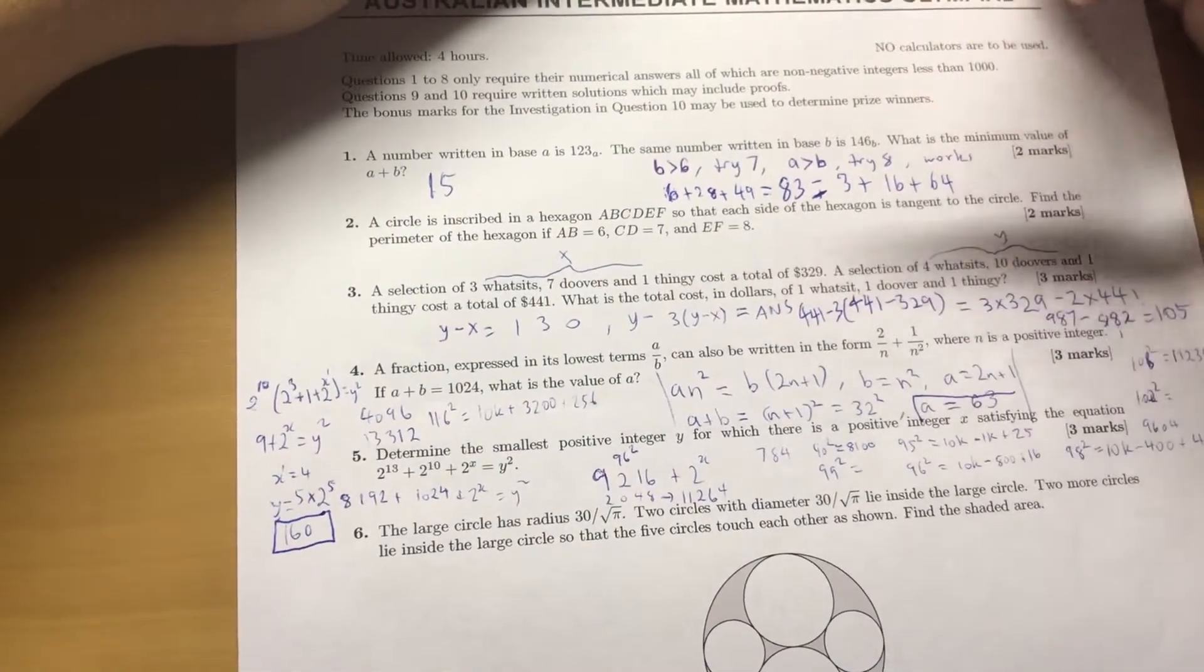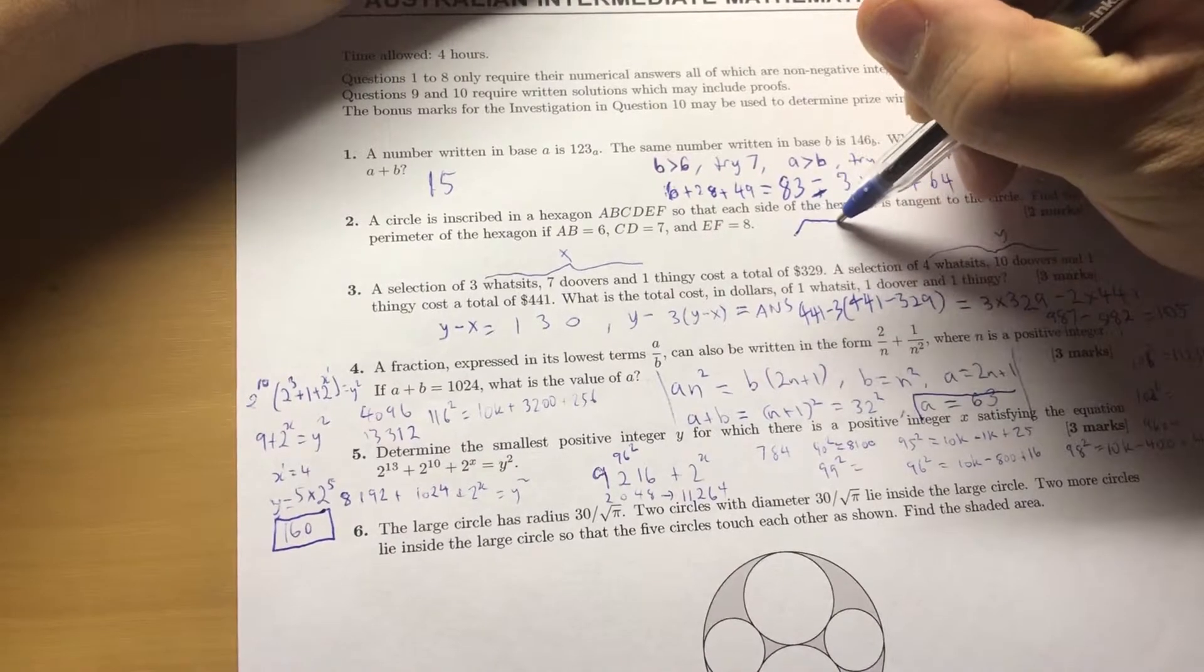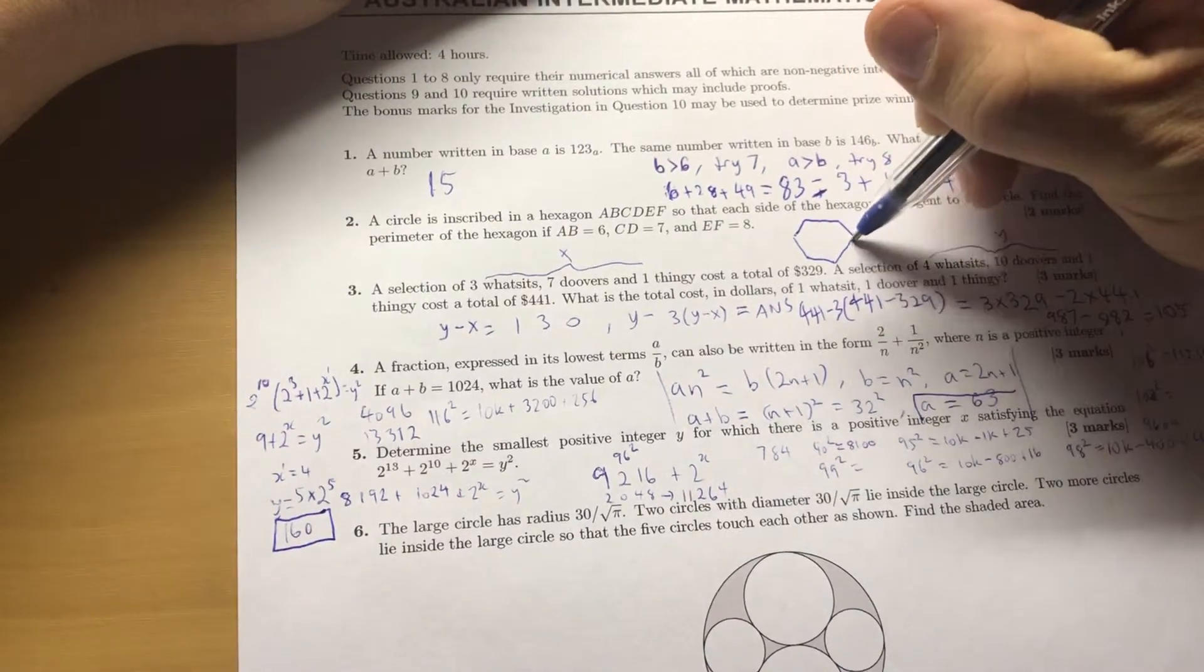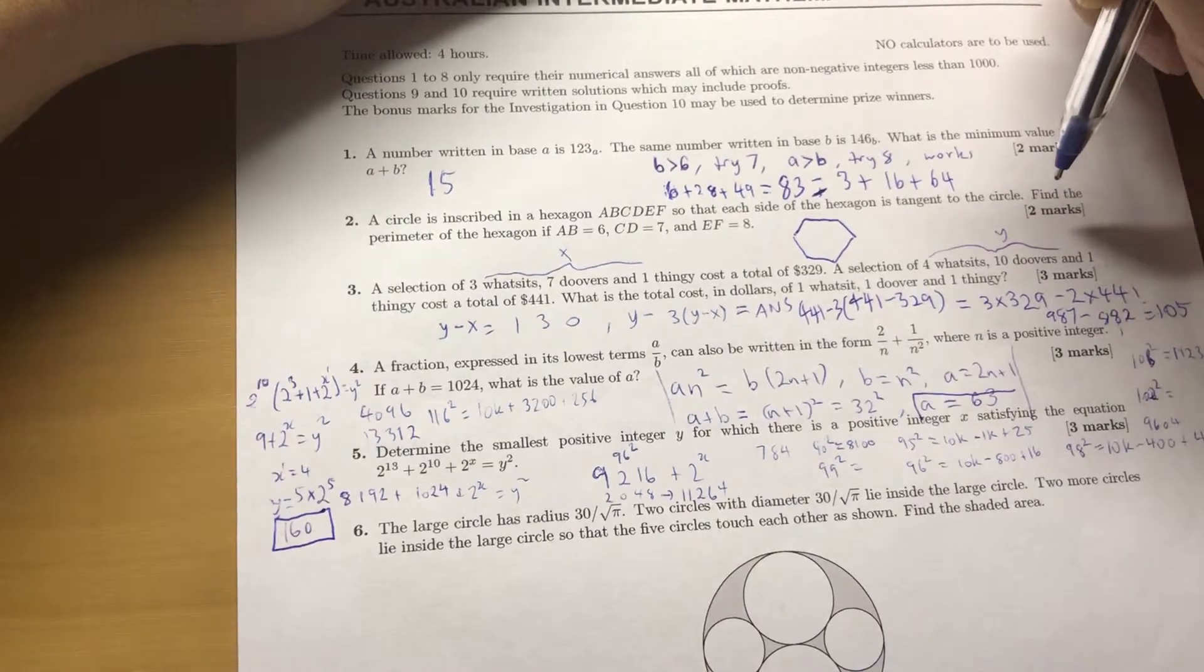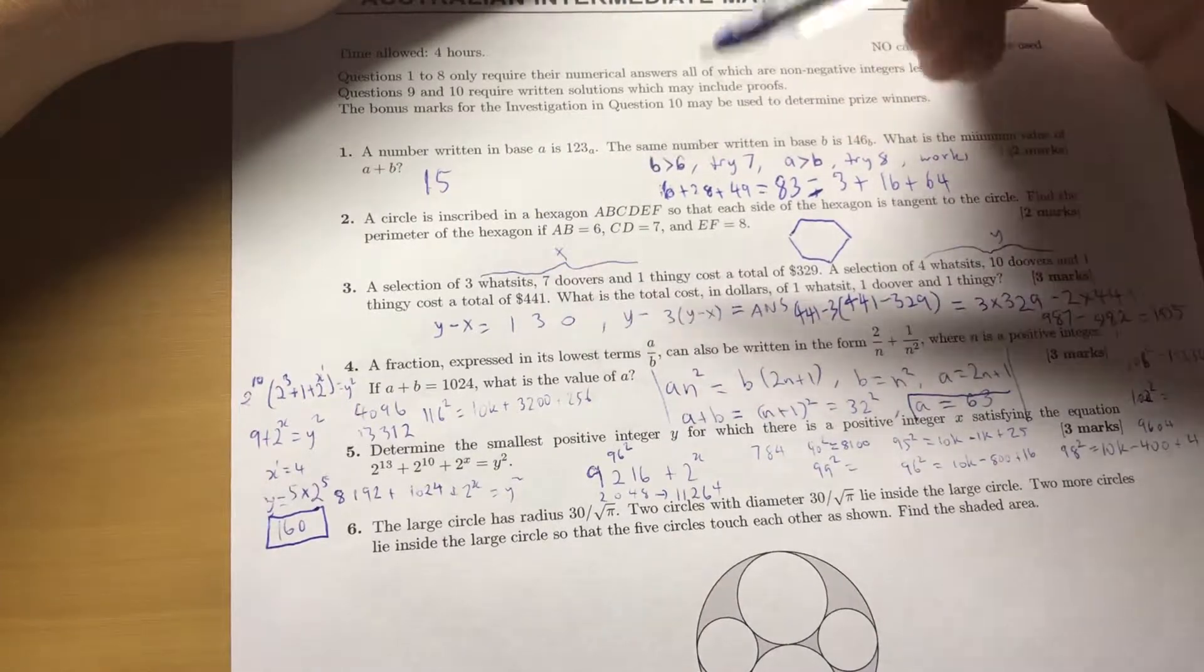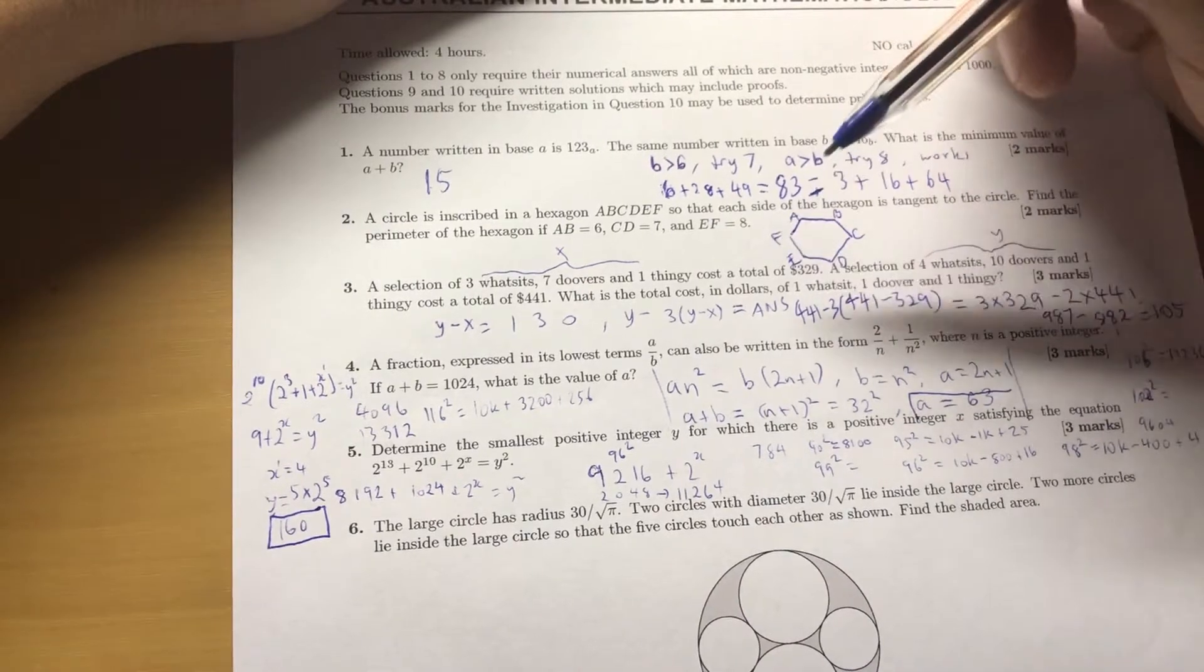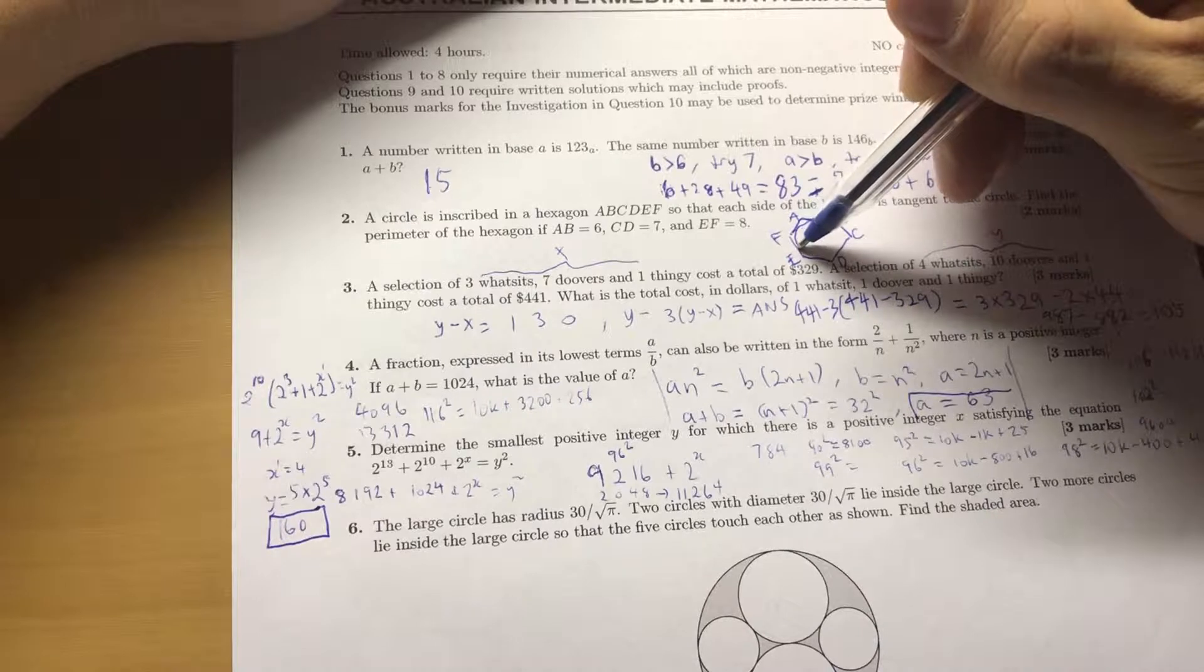Anyway, ABCD is a hexagon. And there's a circle inside, find the perimeter of the hexagon. A, B, C, D, E, F, it's a circle, oh, so.